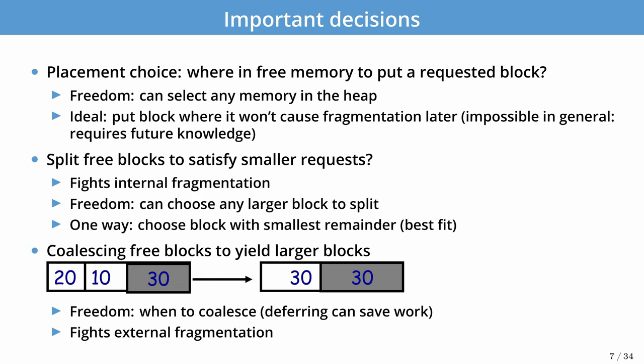There are three main sets of decisions any allocation strategy must implement. The first is placement: deciding which free block to give to the application when a request is made. Ideally we place the block where it won't cause fragmentation later, but this is generally impossible without future or application-specific knowledge. The second is splitting blocks to satisfy smaller requests, fighting internal fragmentation. If we have blocks of 30 bytes but only need 10, we split them into 10-byte chunks. The choice of which block to split comes back to the internal and external fragmentation we might cause.